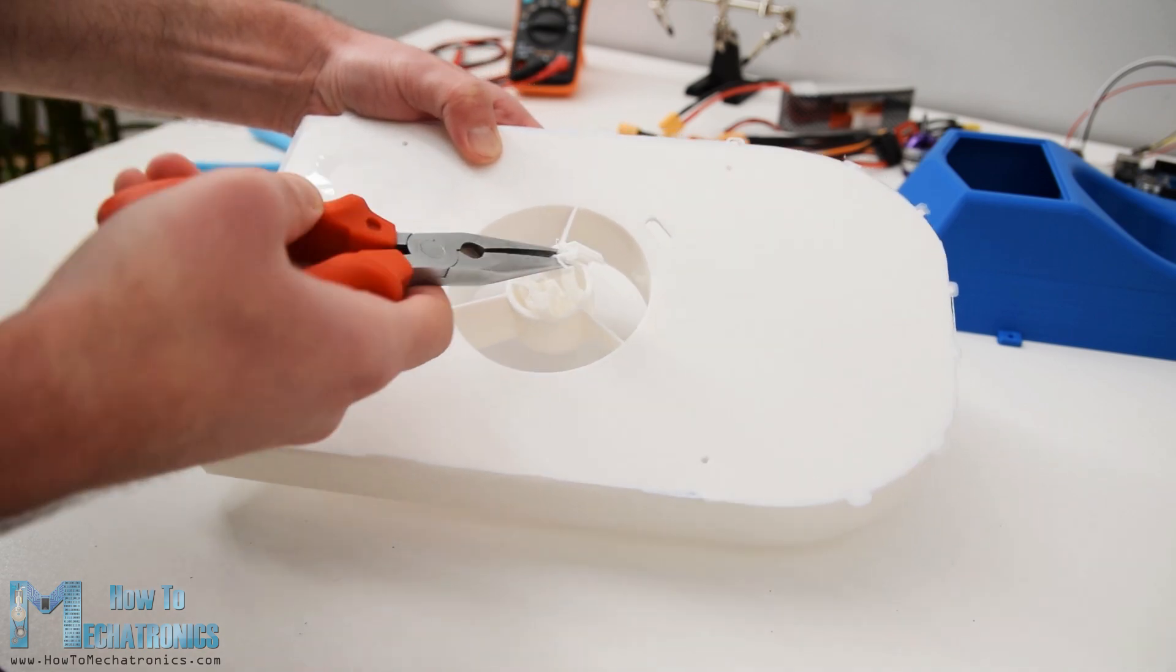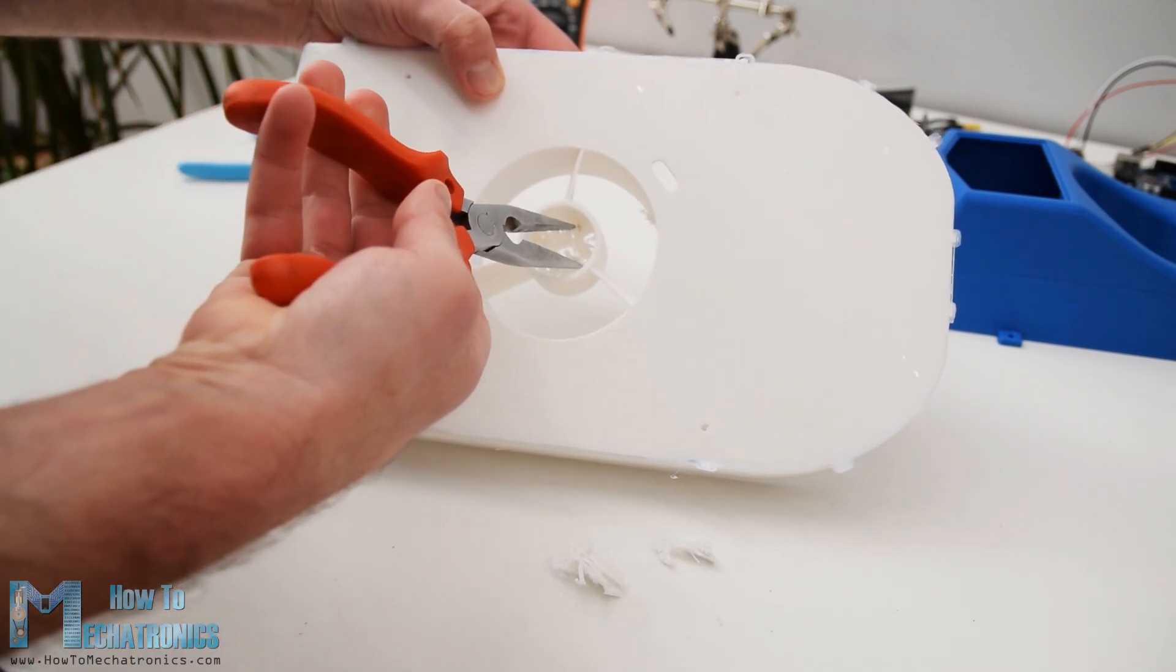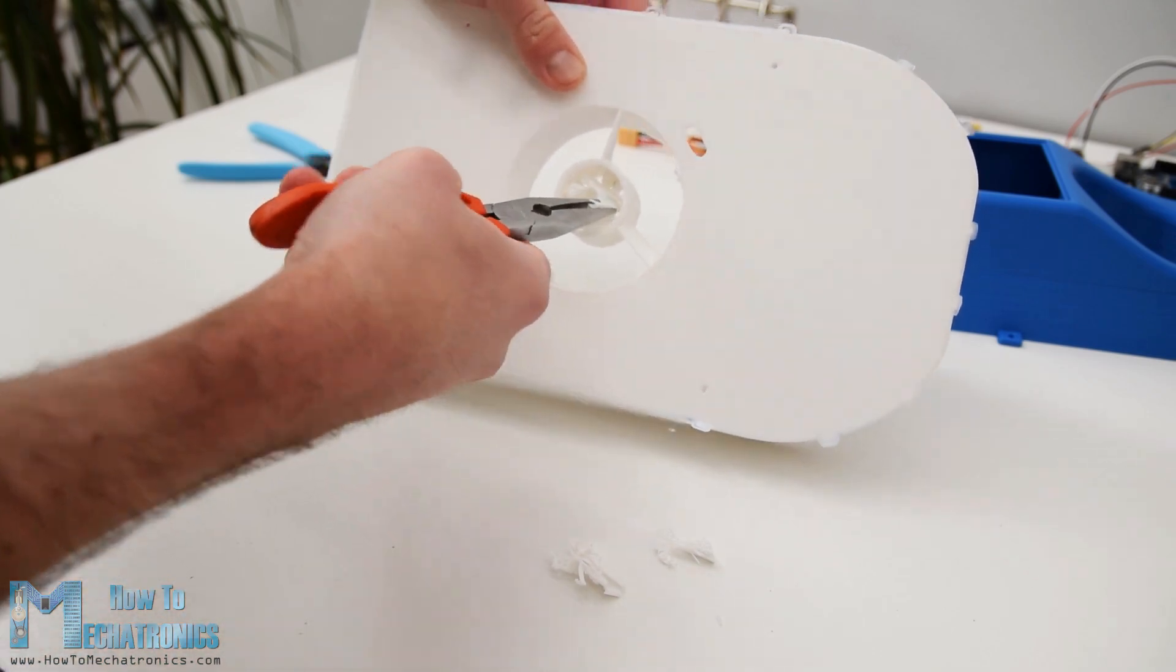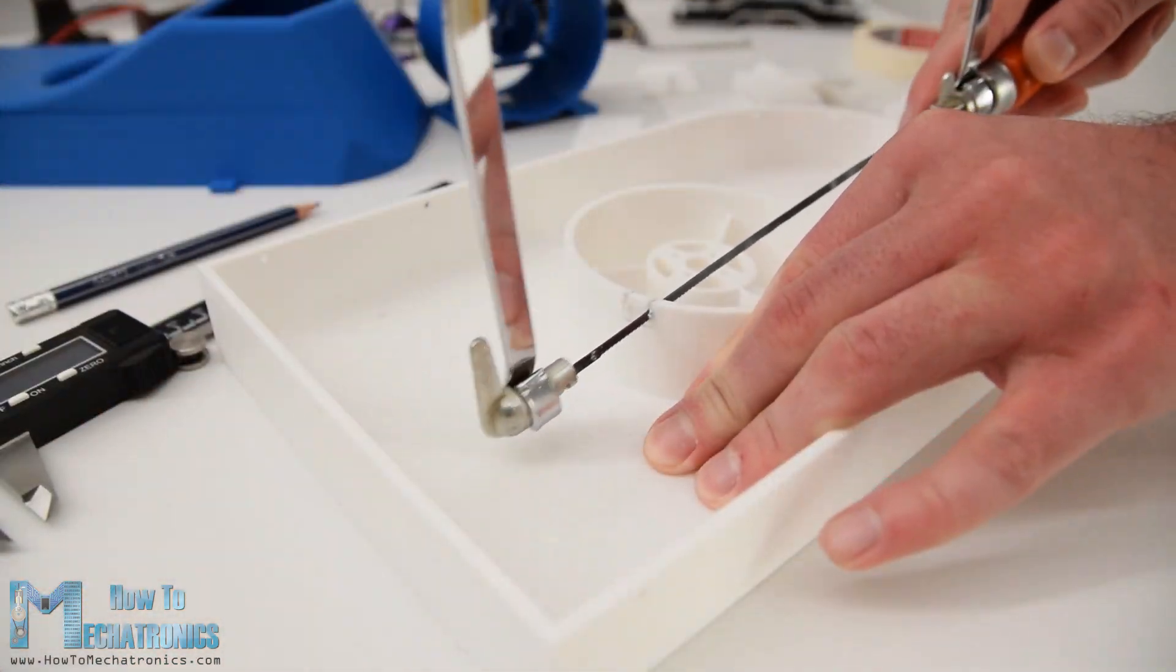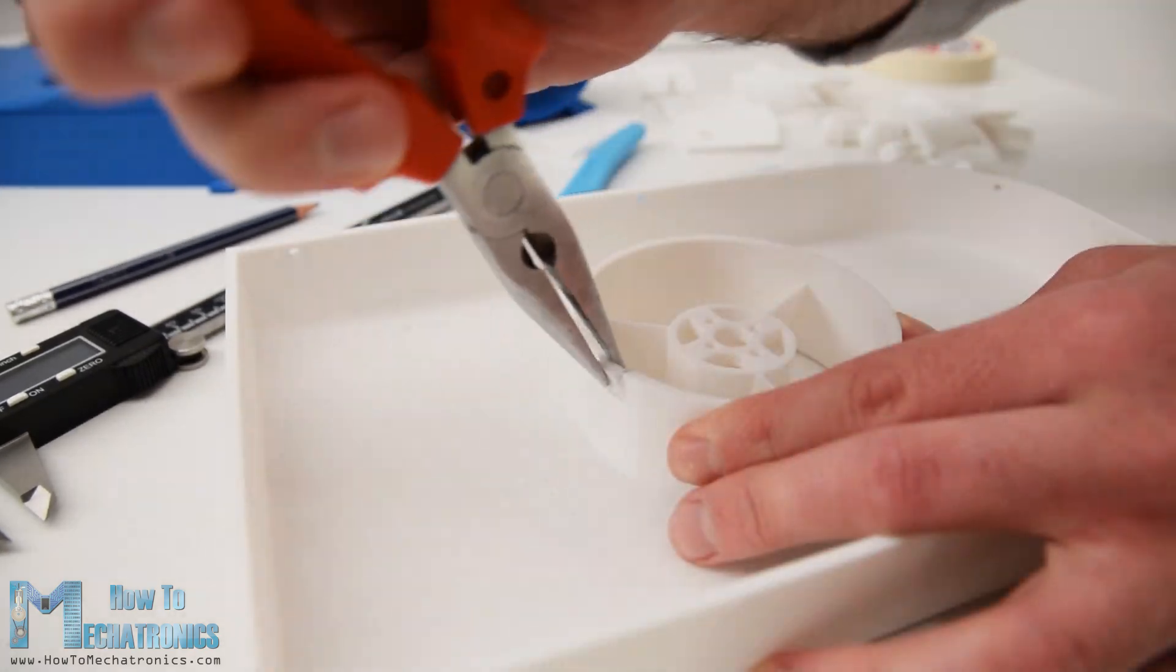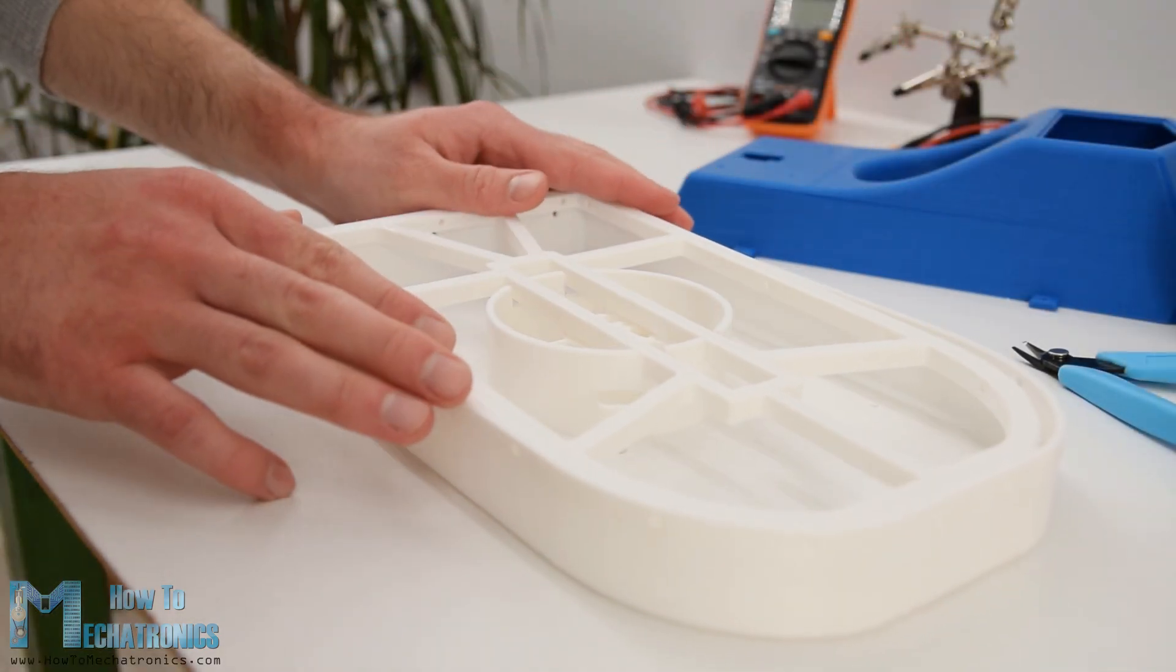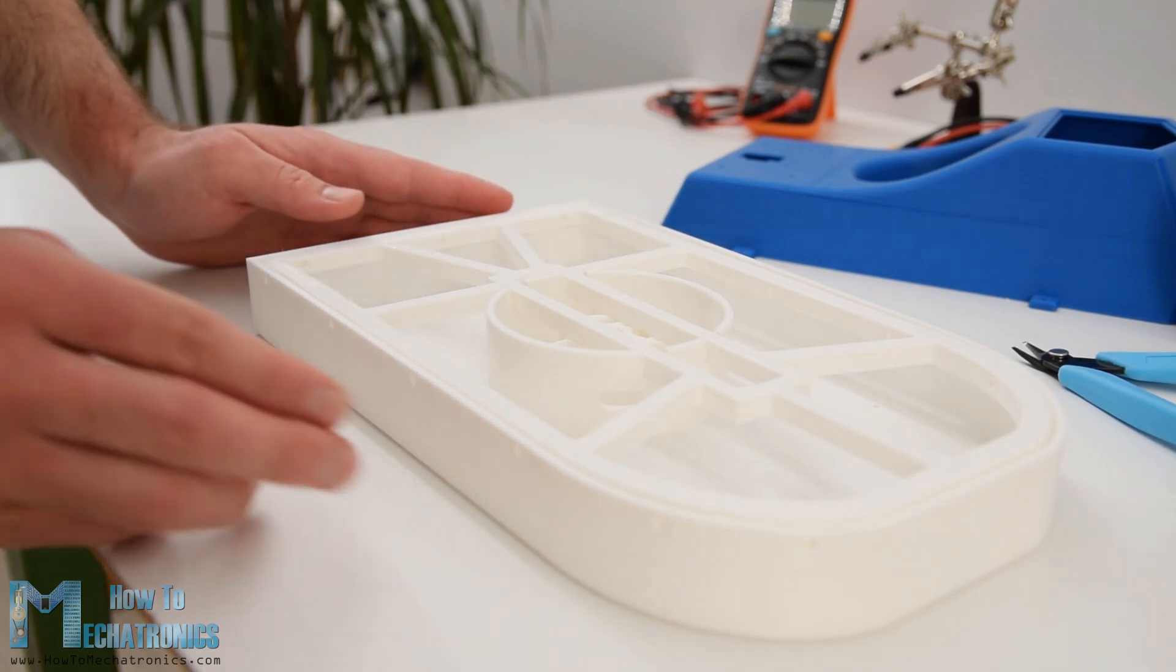The hull of the hovercraft was printed upside down and it had just a minor amount of support material to be removed. Actually, I had to make some adjustments to this print and cut some material out of the central blower housing, so that the skirt holder can fit in properly. I will update the 3D model before attaching it to the website, so you won't have this problem.